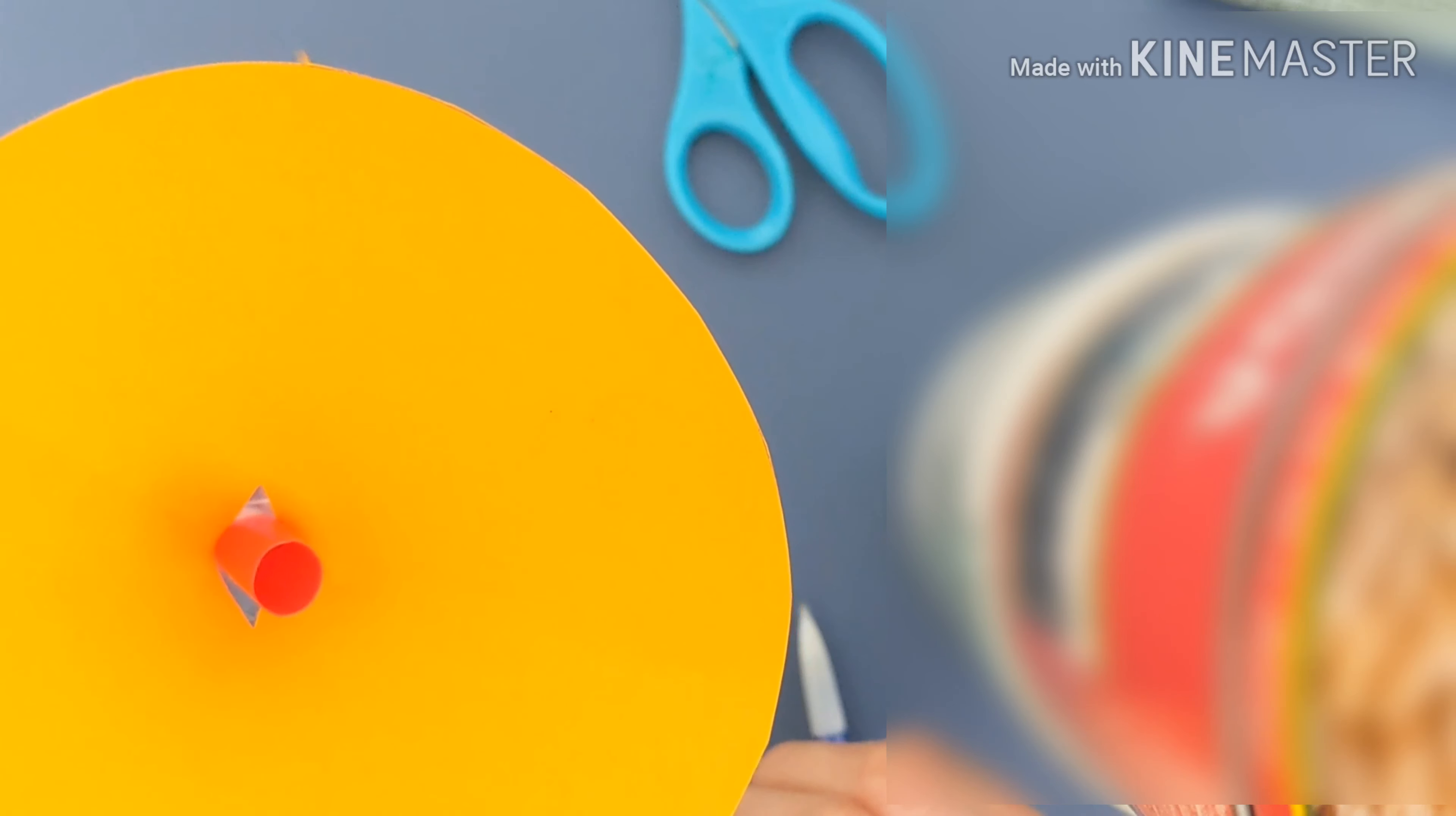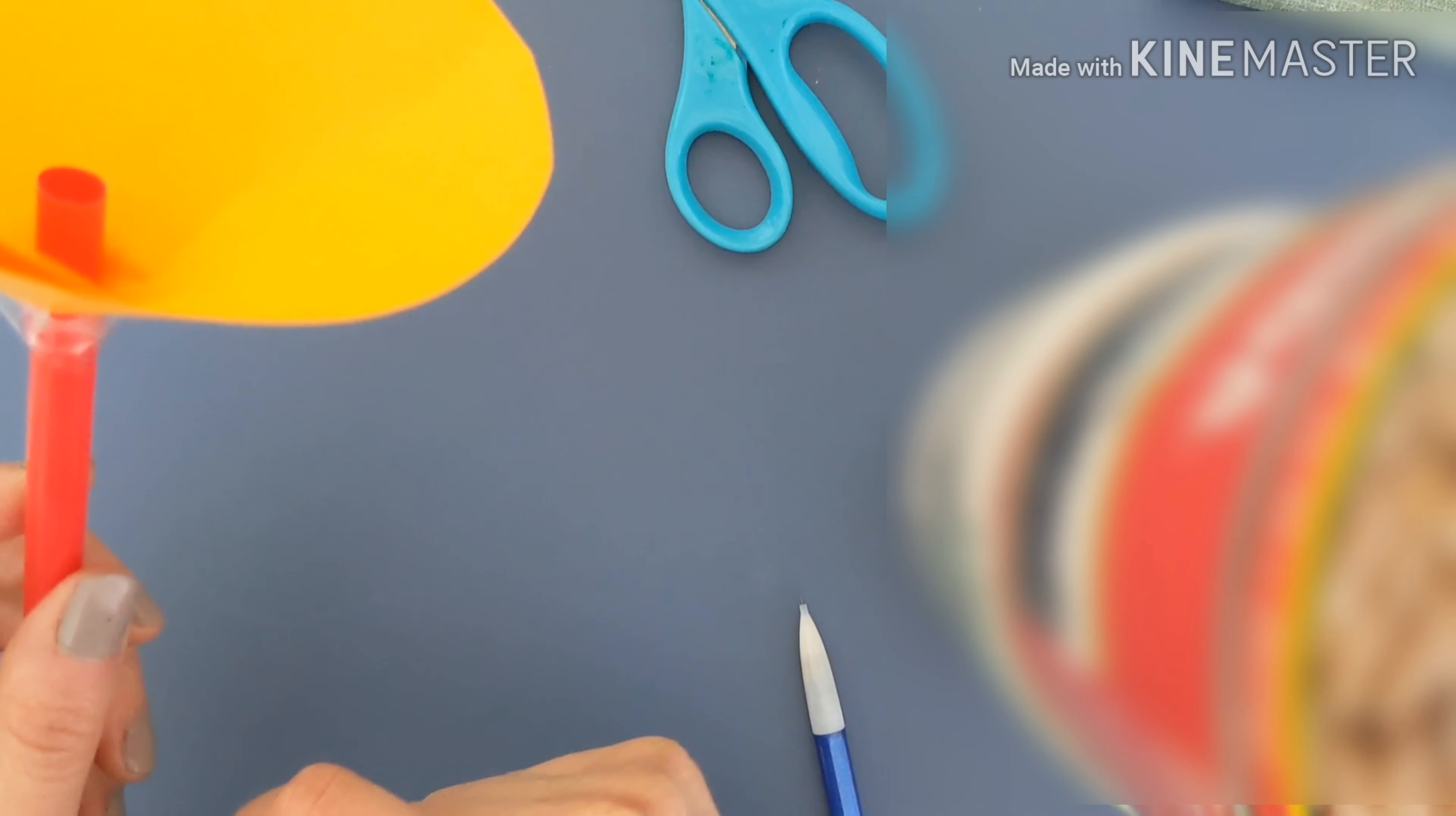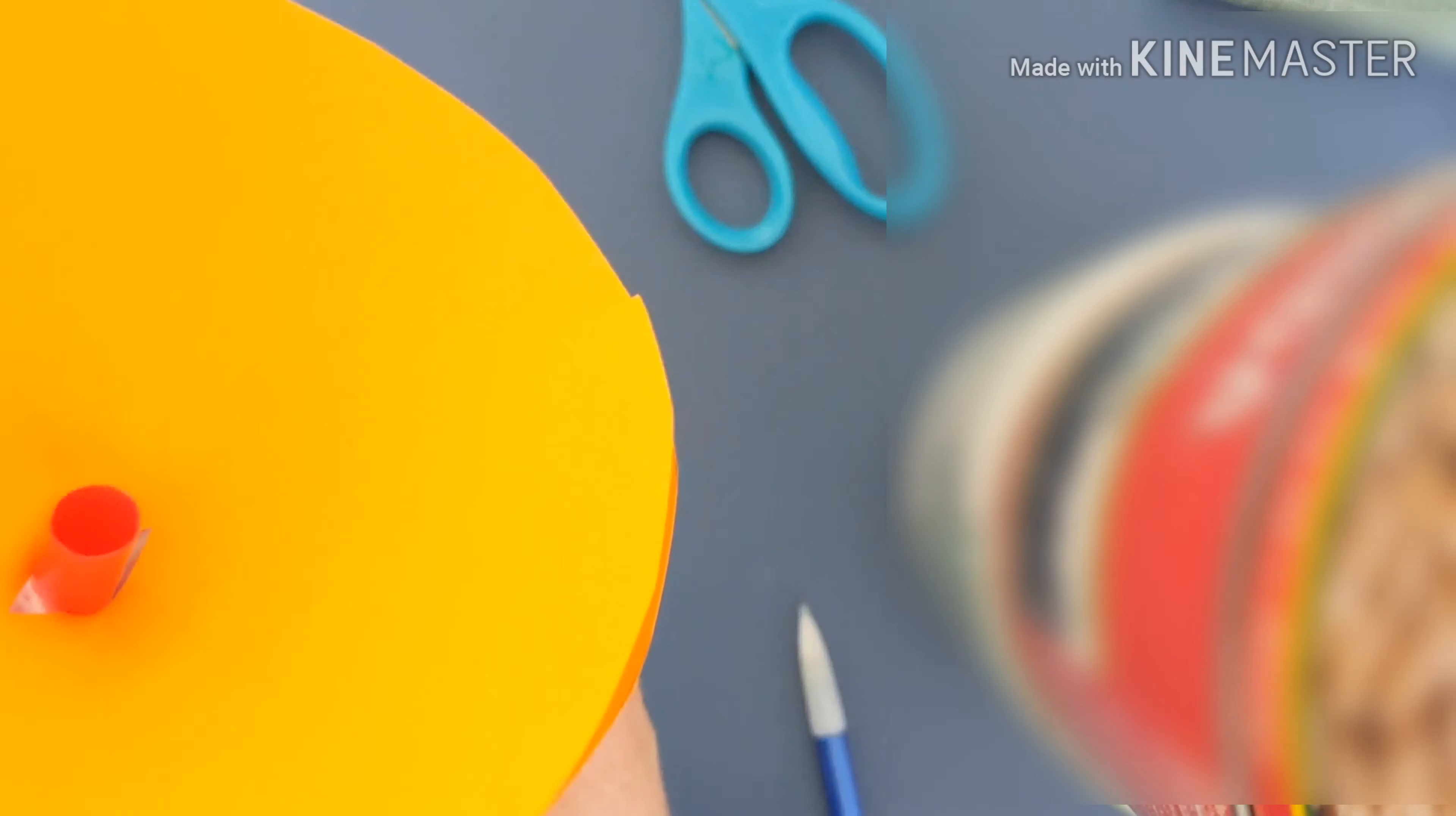Next, you're going to have to find a very lightweight ball. If you have like a ping pong ball, that would work well. I don't have one at home, so what I'm going to do is I'm just going to use a little bit of aluminum foil and I'm going to form it into a ball. So go ahead and gather that, and then let's get back together and see what we can do with this contraption.